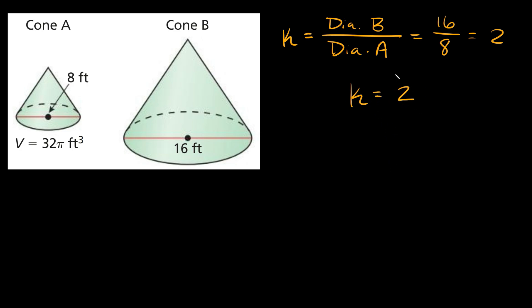Now once you find your scale factor, now we're going to compare the volumes. So first, we're going to say that the volume of cone B over the volume of cone A is equal to k cubed. A couple things here.